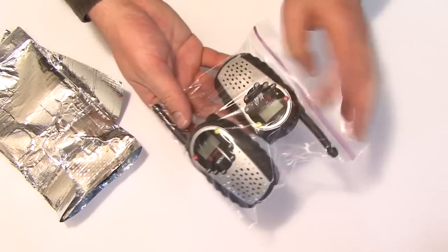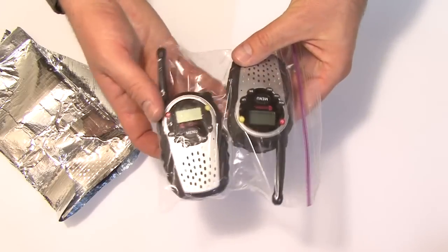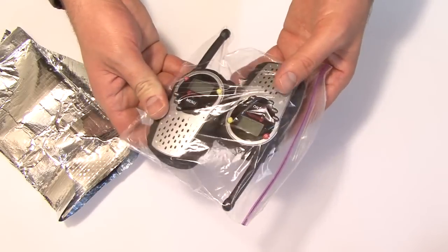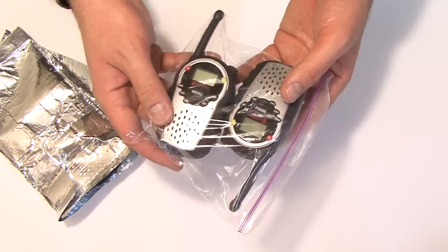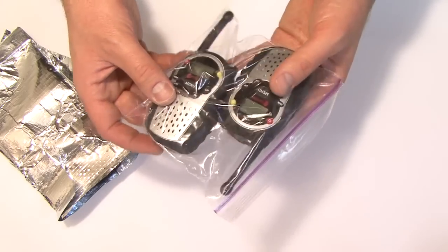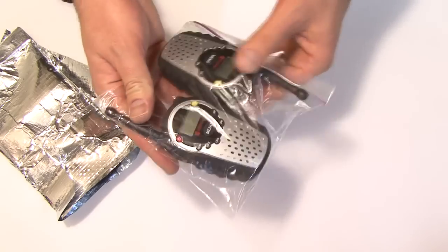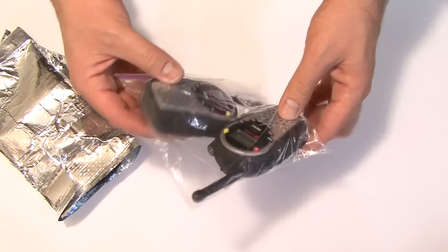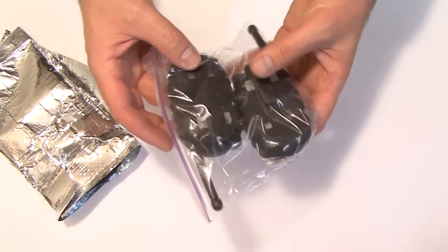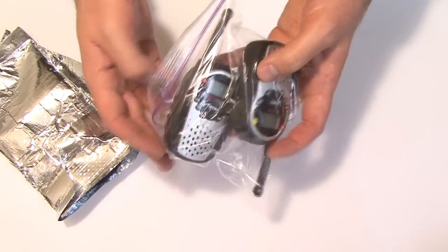If an EMP goes off, the likelihood of a cell tower and cell phone working is very slim, and so you want to be able to communicate with people. Now I have a solar powered battery charger that charges double-A batteries, and then I have a store of rechargeable batteries.